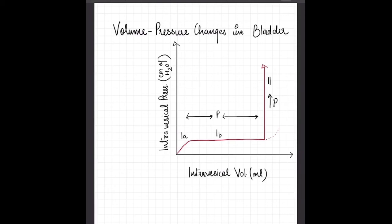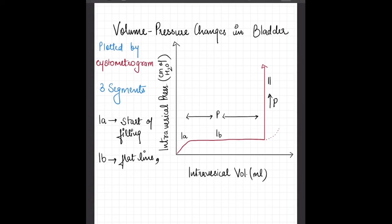Now, we will see the volume pressure change in the bladder in the form of graph. It is plotted by cystometrogram. It has three segments: one A, one B, and second segment. The first A segment is when pressure changes and volume changes. When pressure starts rising in the bladder, the volume also increases in the bladder because of urine. Second is one B segment which represents flat line because the pressure is constant now, but the volume of bladder is still increasing. It is explained by Laplace's law where tension equals pressure into radius.